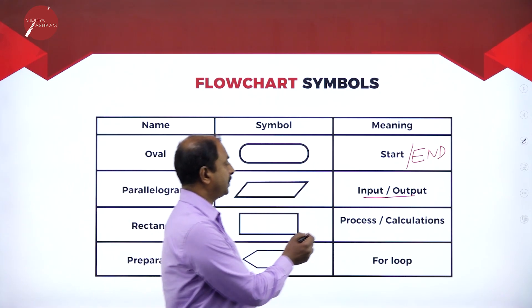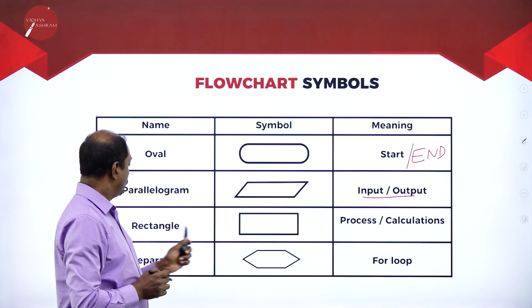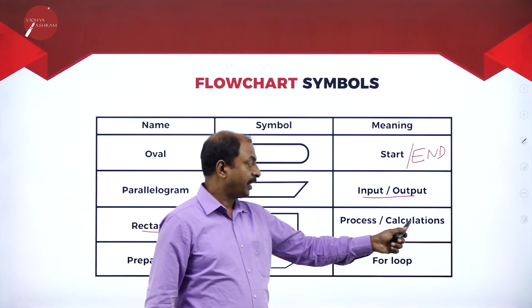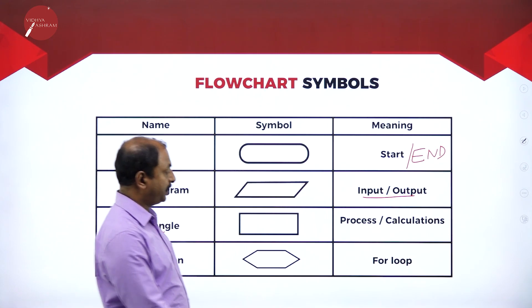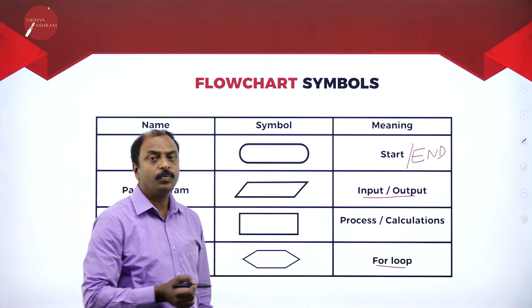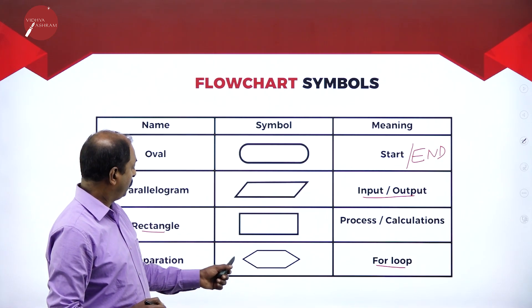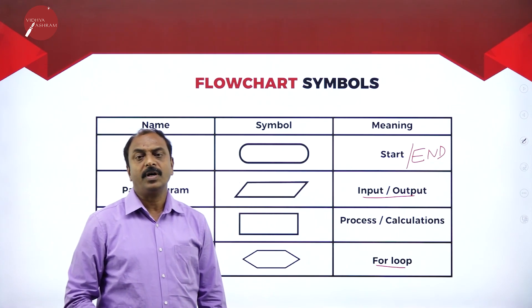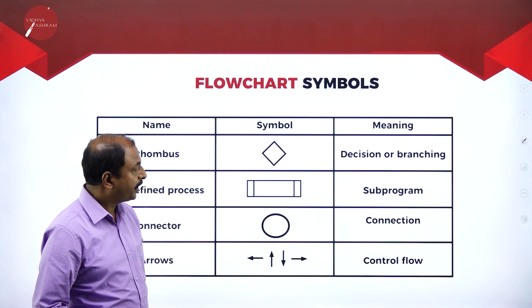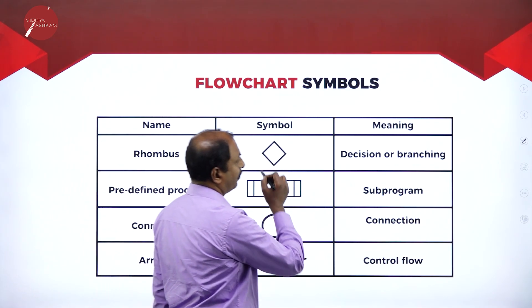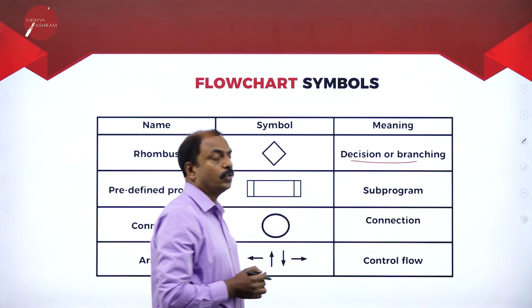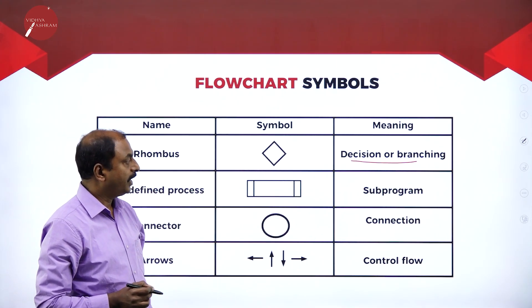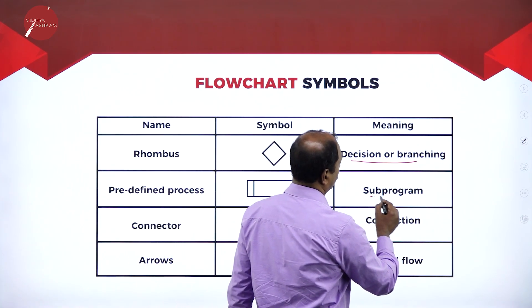Next is process or calculation, represented by a rectangle. We use the rectangle to indicate processing or calculation. Next is preparation — we use this symbol to represent a for loop, a type of program construct used for repetition of statements. Next one is the rhombus, used for decision and branching. To represent a decision or branching statement we use the rhombus.